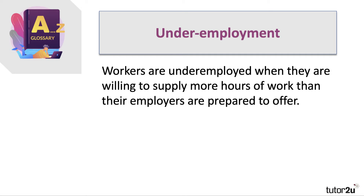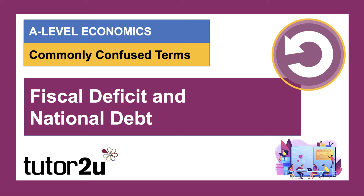They might also be discouraged workers — people who have been out of work for such a long period of time that they've effectively given up the active search for work. Underemployment, on the other hand, refers to people who are in work but not fully employed — typically willing to supply more hours than their employers are prepared to offer, such as part-time workers who want to go full-time but can't find the opportunity.